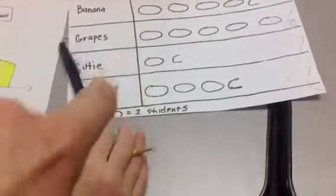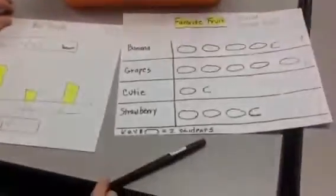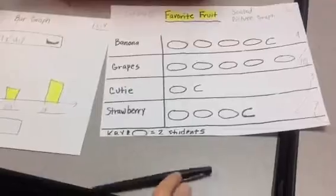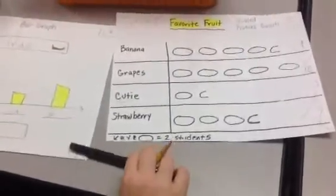Okay, so if it's only half of it you have to divide that number of students in half, which two would be one. Very good, excellent.